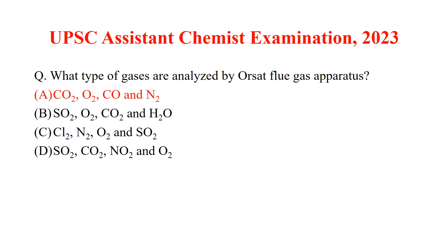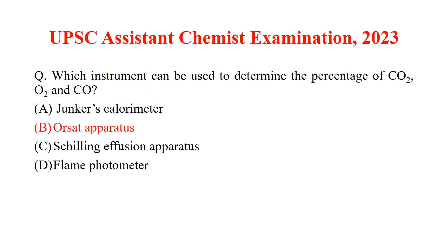What type of gases are analyzed by the ORSAT flue gas apparatus? The ORSAT flue gas apparatus measures CO2, O2, and carbon monoxide. It also analyzes nitrogen indirectly, so the answer is option A. The next question asks which instrument can be used to determine the percentage of CO2, O2, and carbon monoxide — the answer is the ORSAT apparatus.